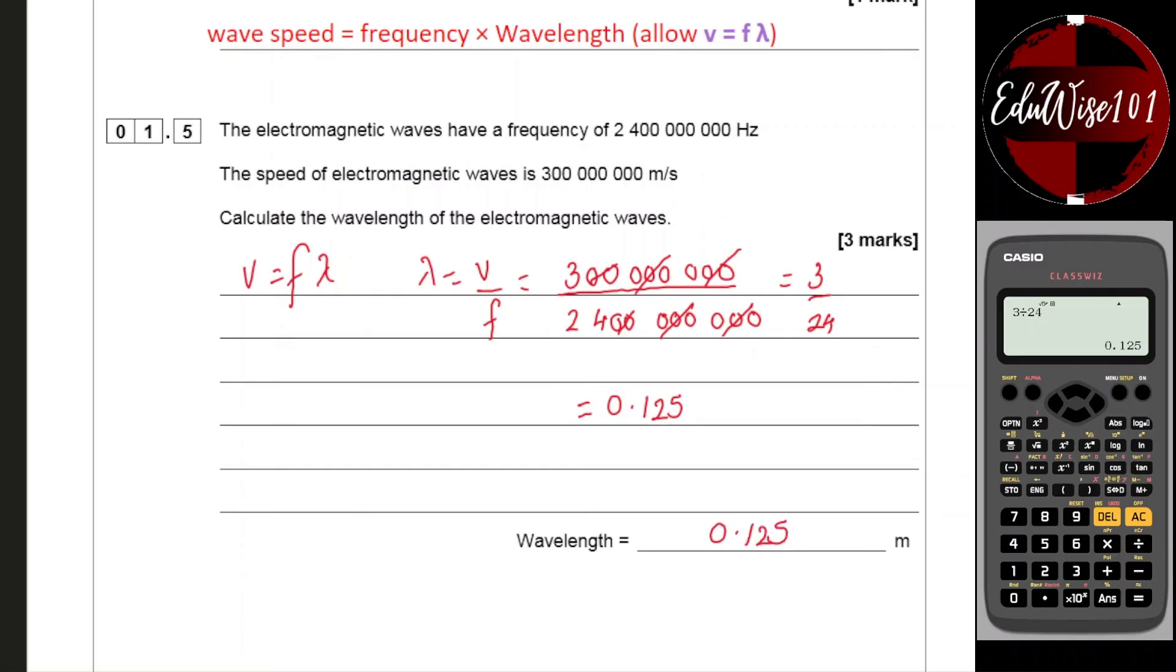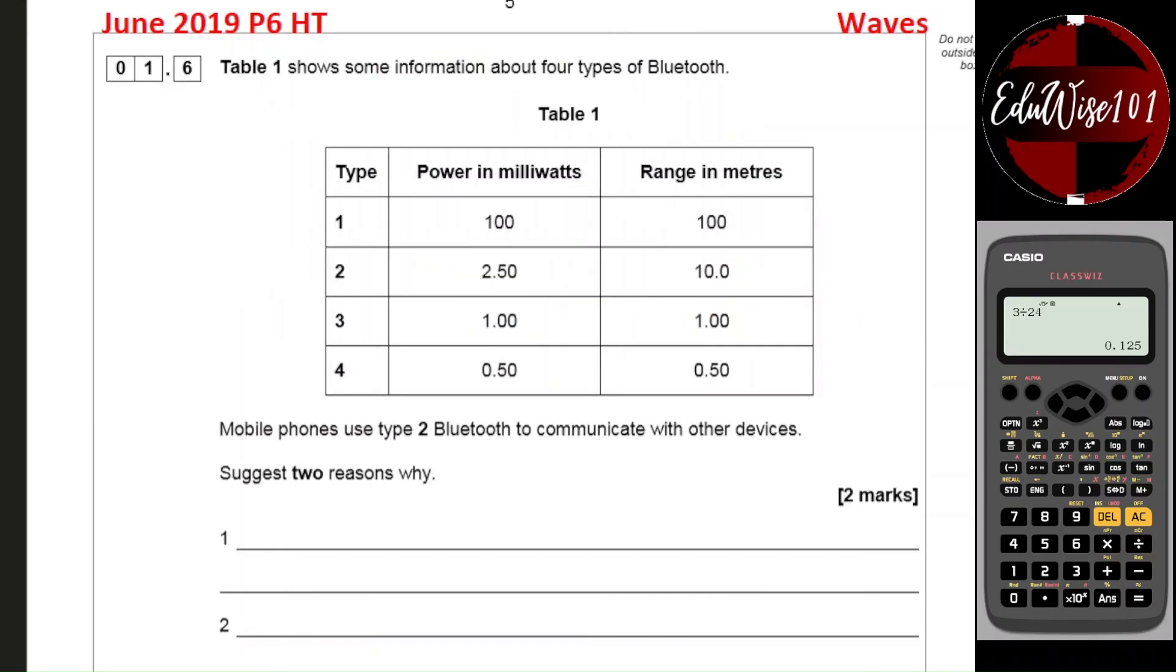Question 1.6: Table 1 shows some information about four types of Bluetooth. So you have type one to four, power in milliwatts and the range in meters. So as you can see as the power goes down from 100 to 2.5 to 1 to 0.5, the range is also decreasing in meters. Mobile phones use type 2 Bluetooth to communicate with other devices. Suggest two reasons why.